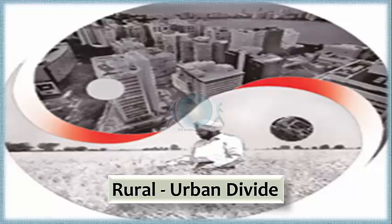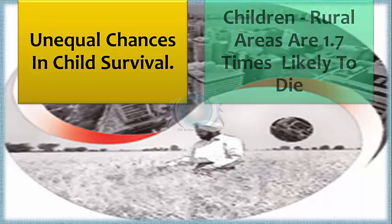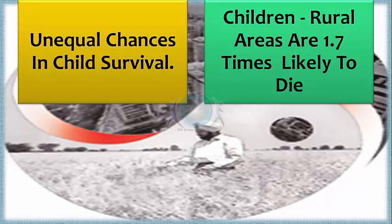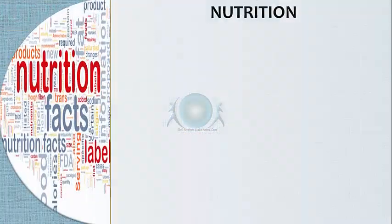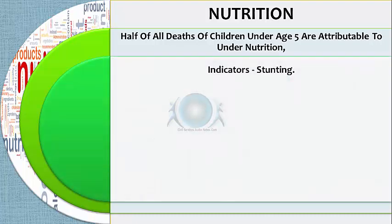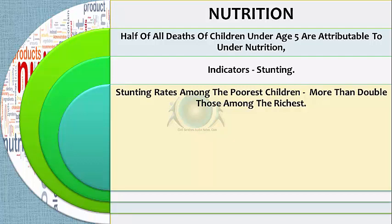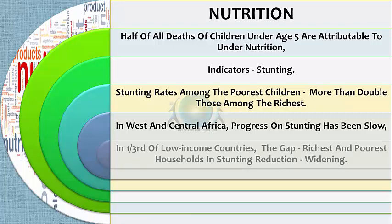The rural-urban divide contributes to unequal chances of child survival. Children born in rural areas are 1.7 times more likely to die before age five than children born in urban areas. Nutrition is another critical factor: half of all under-five deaths are attributable to undernutrition, and large disparities exist in stunting rates. Stunting rates among the poorest children are more than double those among the richest in western and central Africa, and in over one-third of low-income countries the gap between richest and poorest in stunting reduction has been widening.